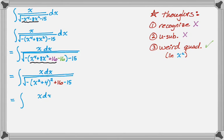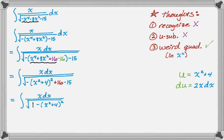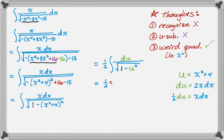I'm going to rearrange it so it looks how I prefer. I'm thinking arc sine at this point. 16 minus 15 is 1, so I put that first — it's 1 minus (x squared plus 4) squared. That looks like 1 minus u squared. I let u equal x squared plus 4, so du is 2x dx, meaning 1 half du equals x dx. Making substitutions: x dx becomes 1 half du, and it's over the square root of 1 minus u squared — a perfect arcsin integral. So the answer is 1 half times sine inverse of u plus c, and substituting back, u is x squared plus 4, giving 1 half sine inverse of (x squared plus 4) plus c.